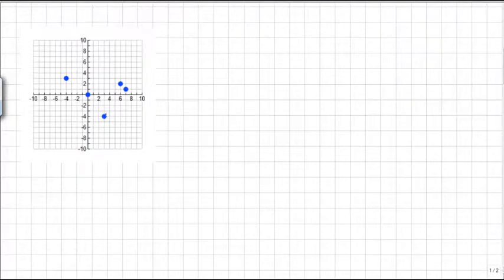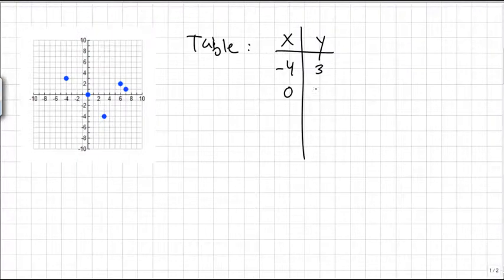This scatter plot here, if I wanted to find out the domain and range for it, the first thing I would do would be to make a table. So my table is just a collection of x and y values for each of those dots. There's one at negative 4, 3, there's one at 0, 0, 3, negative 4, 6, 2, and 7, 1.